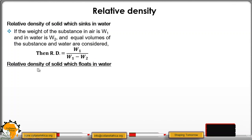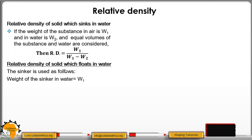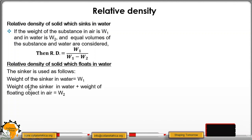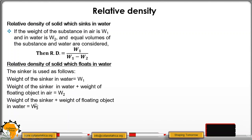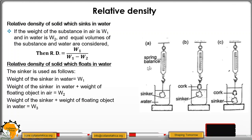For relative density of a solid which floats in water, we use a sinker — something that sinks in water. We get: W1 as the weight of the sinker in water; W2 as the weight of the sinker in water plus the weight of the floating object (above water); W3 as the weight of the sinker plus the floating object when both are submerged in water.